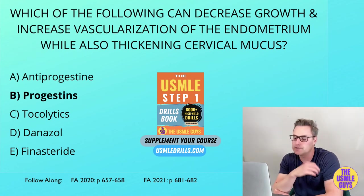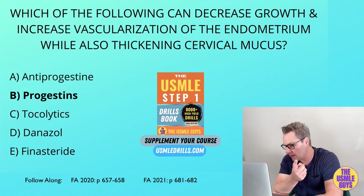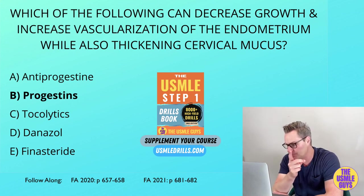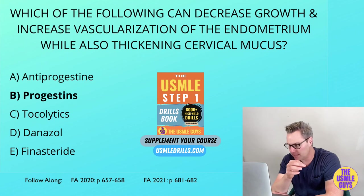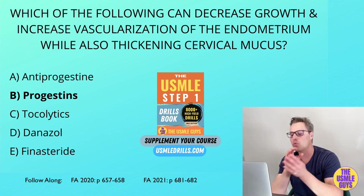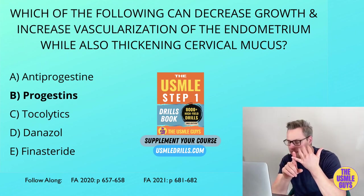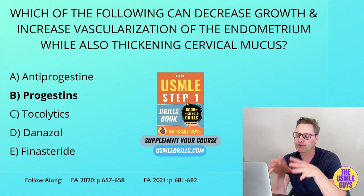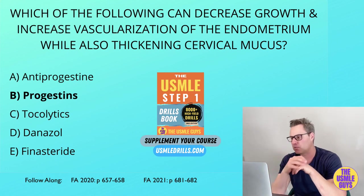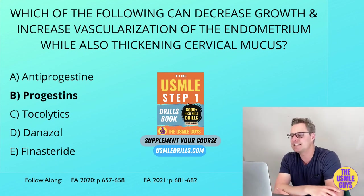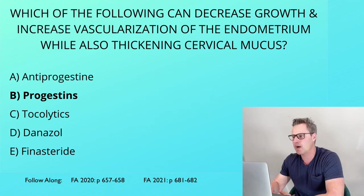Tamsulosin is another prostate drug, but it is used for BPH. It exerts its effects by inhibiting smooth muscle contraction through its alpha-1 antagonist action. This drug is effective against BPH because it is more selective for the alpha-1a and alpha-1d receptors found in the prostate. That is the end of this lecture — I will see you on the next topic.